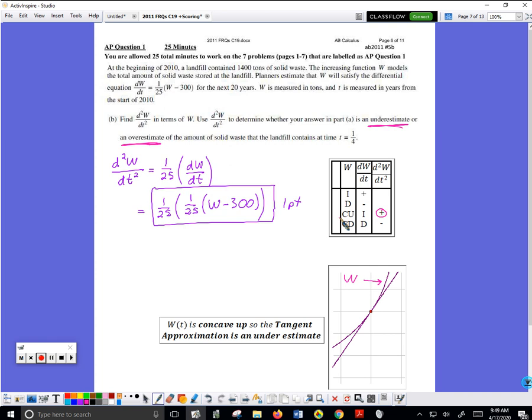Well, right here at time equal zero, the value of W is 1400, and they tell me that W is increasing. So I plug in 1400 or any number bigger than 1400, this second derivative is going to be positive.